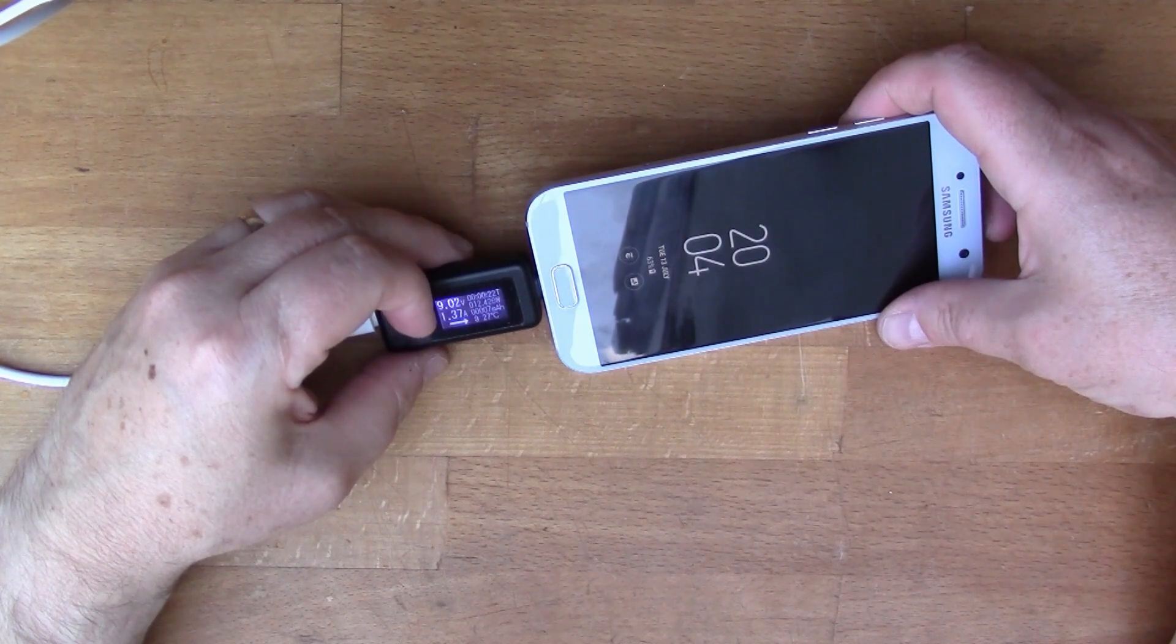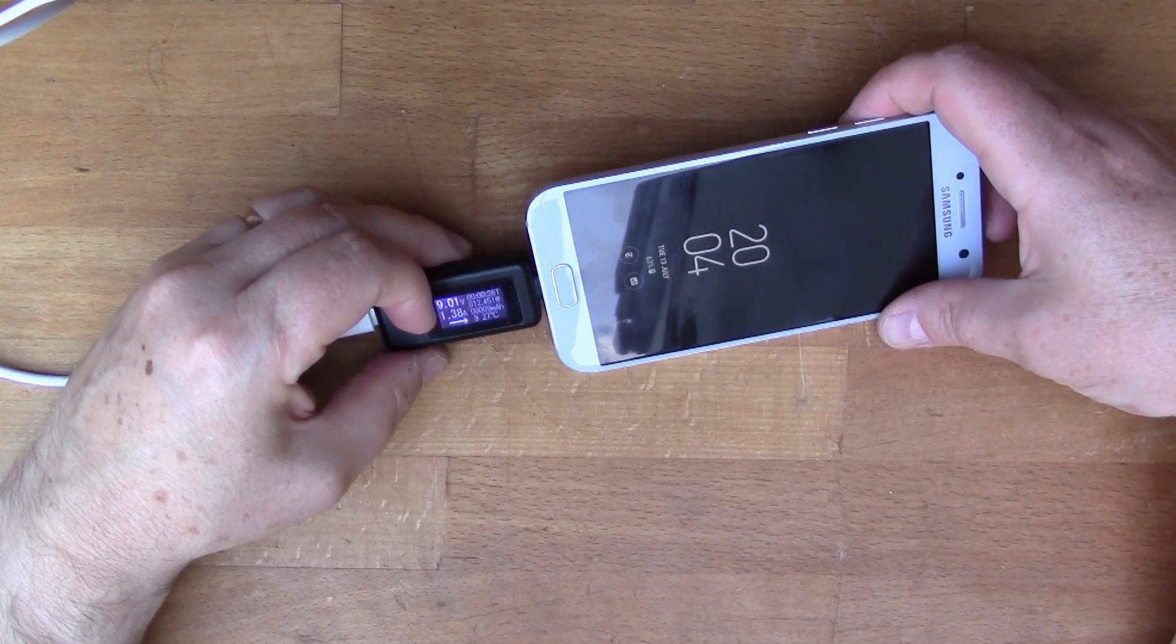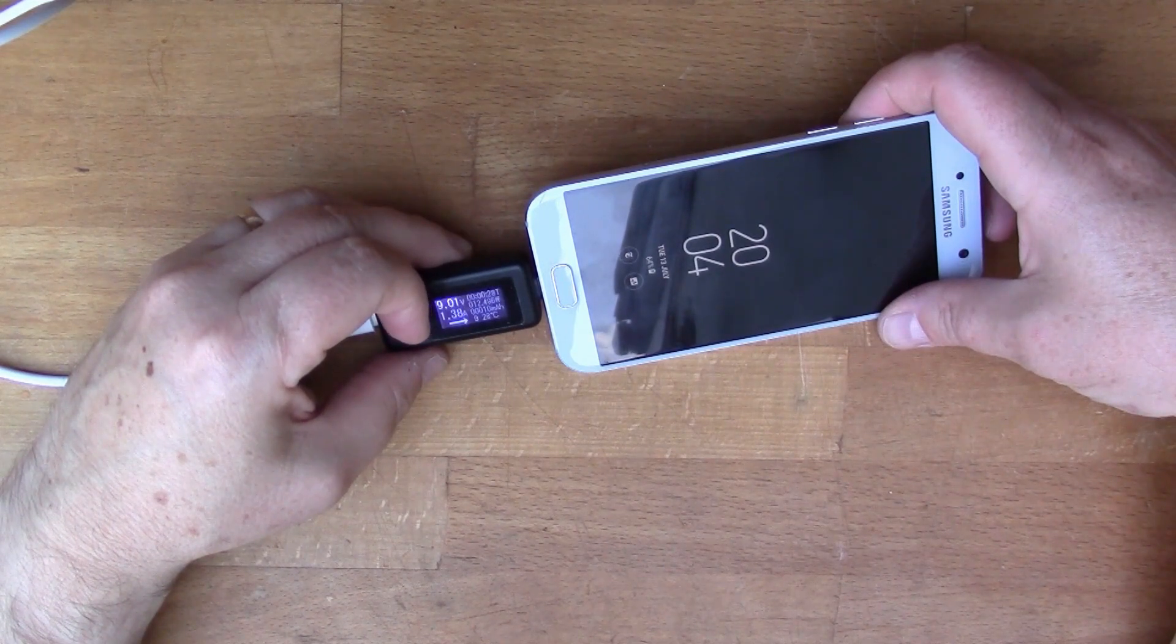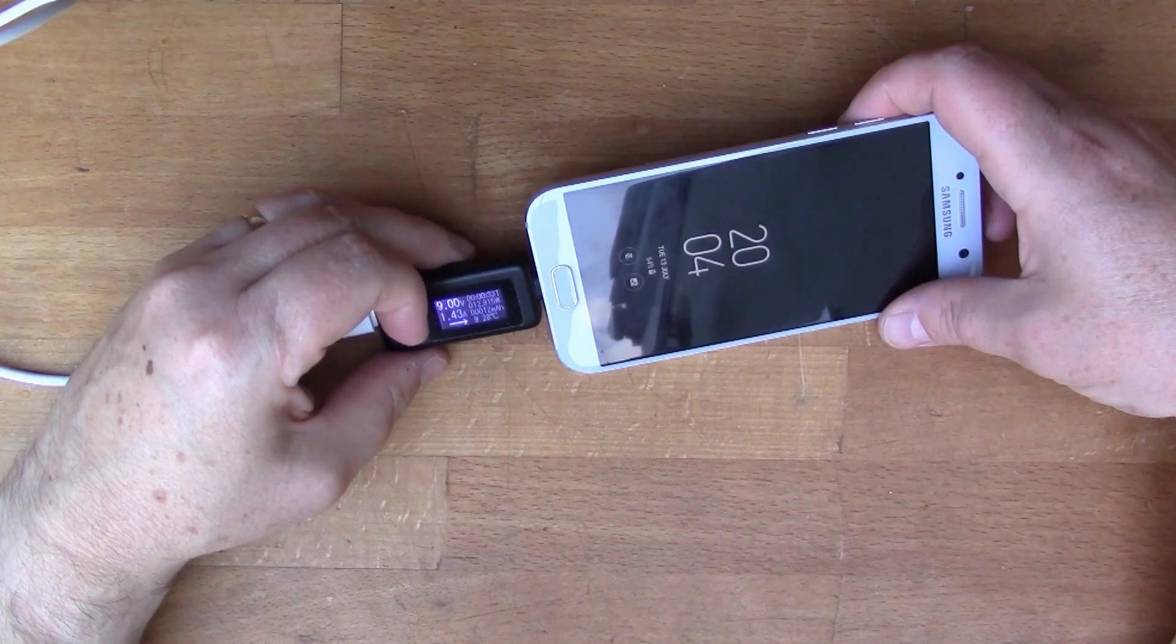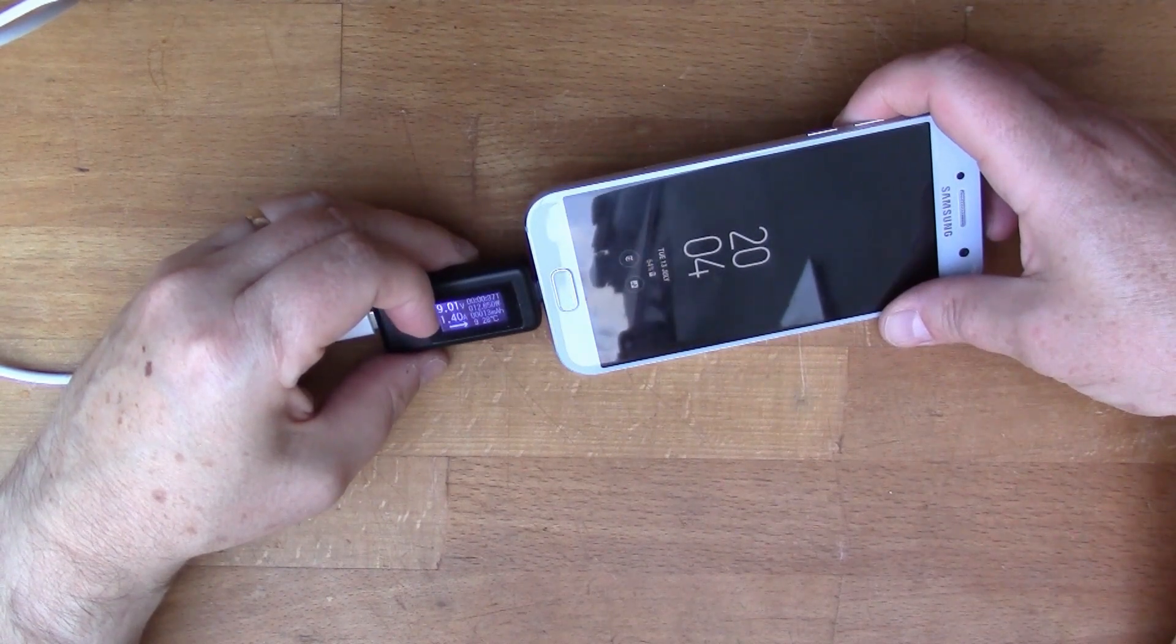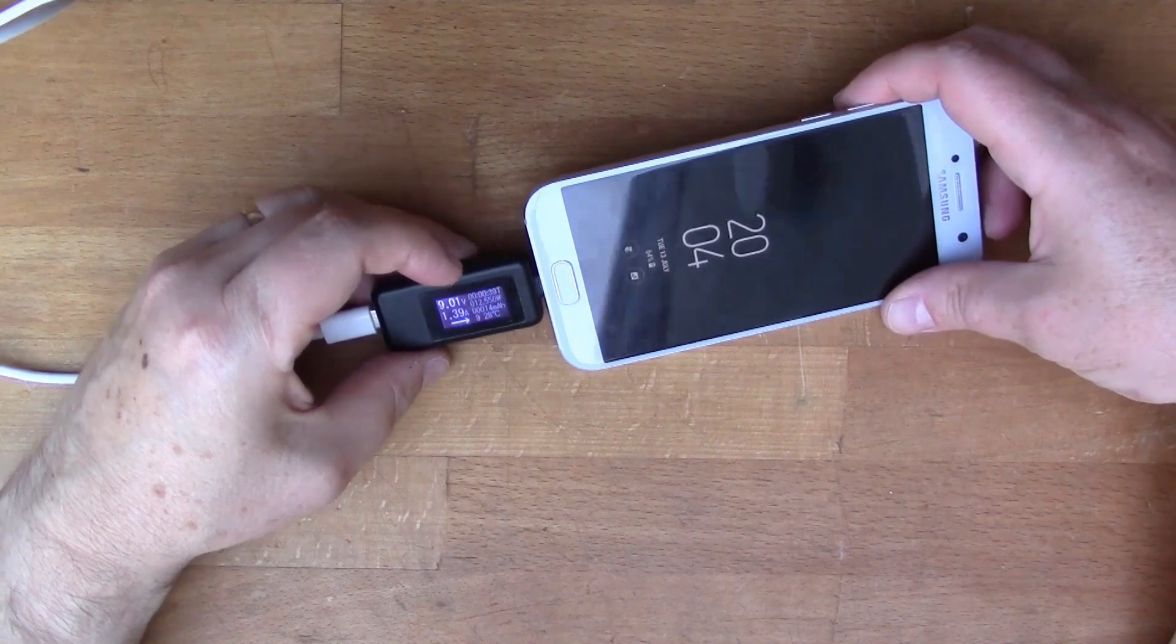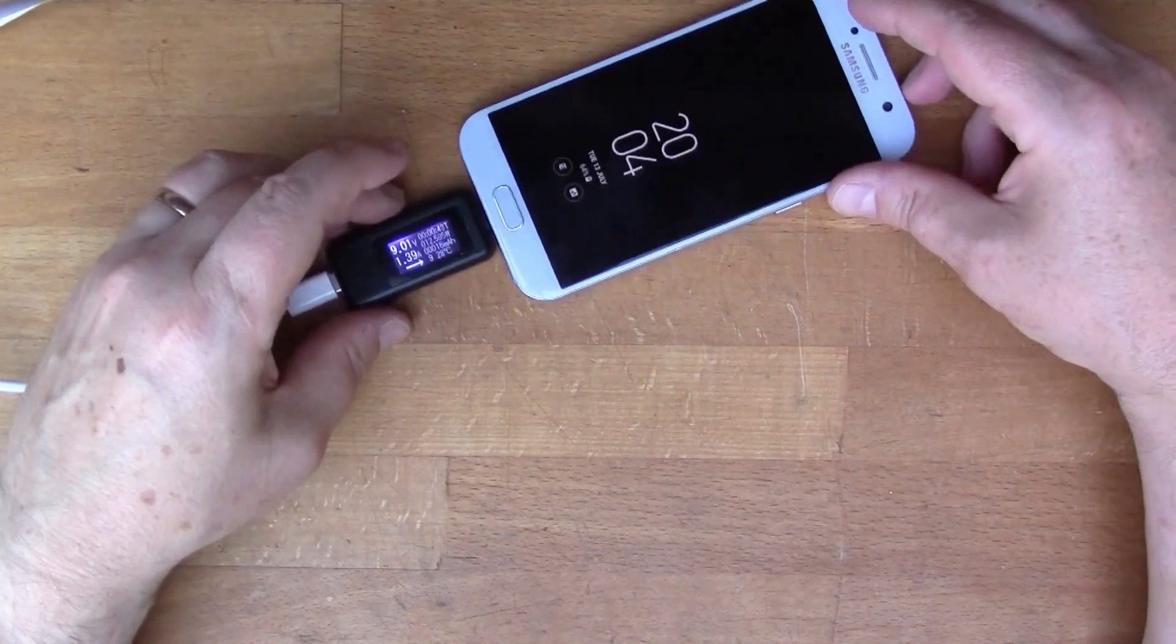So that's what is that? 9 times 1.4 is about 36, so it's about 10 watts plus 4, so about 14 watts. So that's doing a fast charge on my phone.